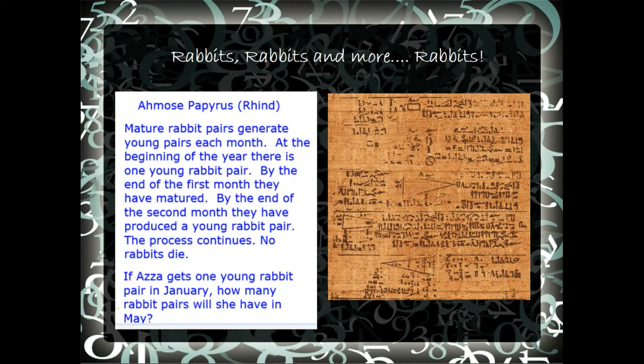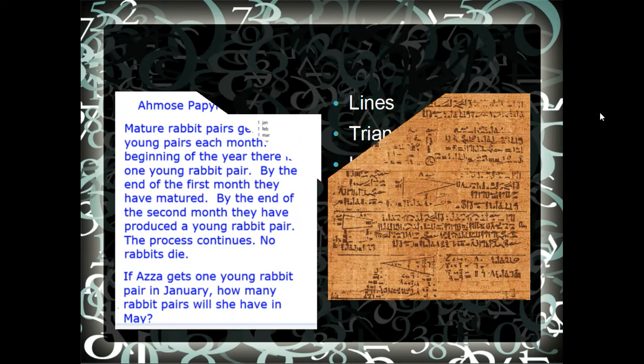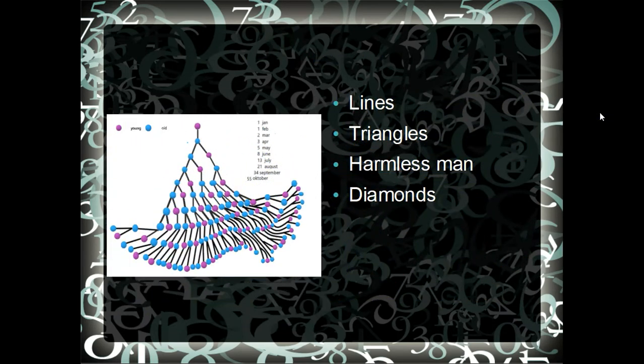And Aza is just one of my friends in class. She wasn't actually in this, I don't think. But hey, you never know. And so, this is what I did for that problem. We went all the way down to October, so that's why it's really long. But the purple is young, and the blue is old.